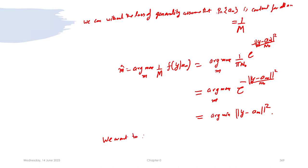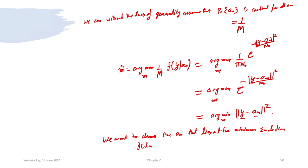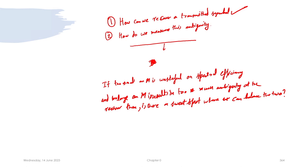So we want to choose the m that lies at the minimum Euclidean distance from the received symbol. This answers our first question of how we can recover a transmitted symbol. But this still does not answer how we measure the ambiguity between two symbols and how the number of constellation symbols affects the ambiguity. We will answer that question in the next lecture.